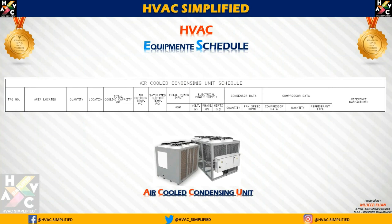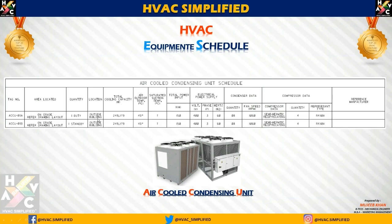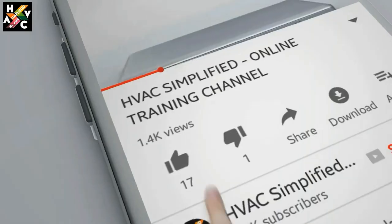Next हम देखेंगे Air Cooled Condensing Unit Schedule। ACCU Schedule के Important Parameters होते हैं: Tag Number, Location, Quantity, Total Cooling Capacity, Air Outdoor Temperature, Saturation Section Temperature, Total Power Input, Power Supply, Electrical Power Supply, Condenser Data and Compressor Data। Location Outside the Building होती है — Air Cooled Condensing Unit आपके Design अनुसार Building के बाहर या Roof के ऊपर Install किया जाता है। Outdoor Temperature यहाँ पर Design के अनुसार 45 degree Centigrade लिए हैं। Saturation Section Temperature आपके Refrigerant का Temperature होता है। Total Power Input आपका compressor का power होता है।